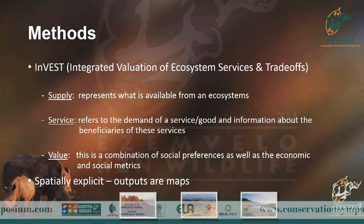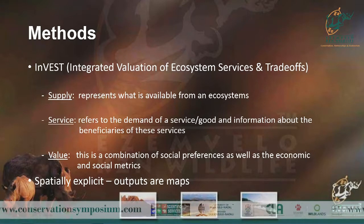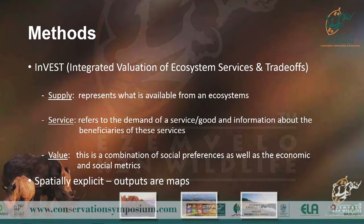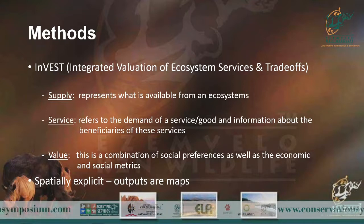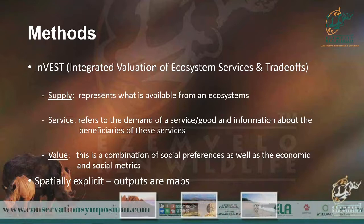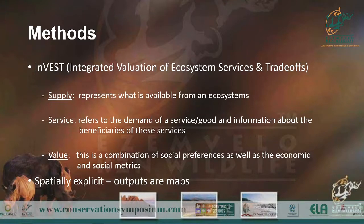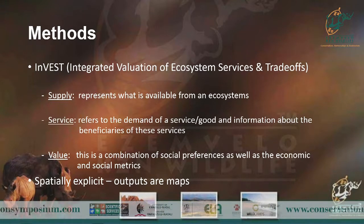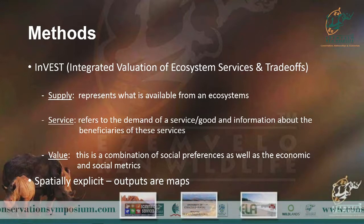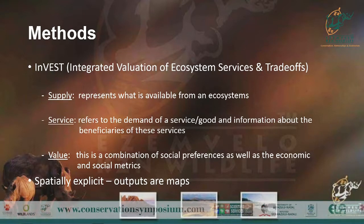It looks at supply — what does the ecosystem structure and process provide? Then it looks at services — who's benefiting and what are they doing with these goods and services? And then it looks at value, which is a combination of social preferences and economic contribution. The outputs of InVEST are maps because it's a spatially explicit model, giving you maps of different patterns of where ecosystems and ecosystem services are provided.